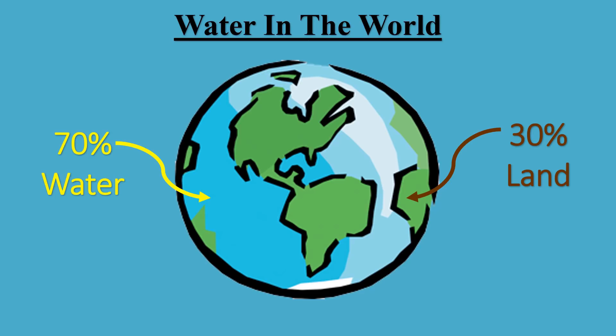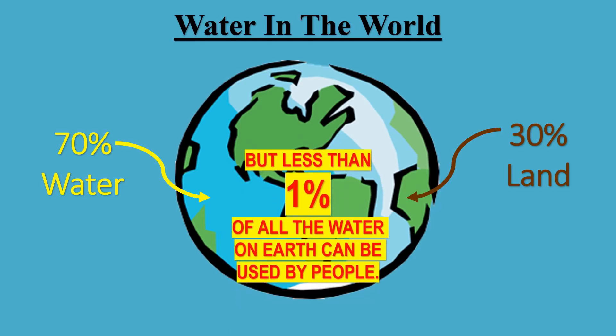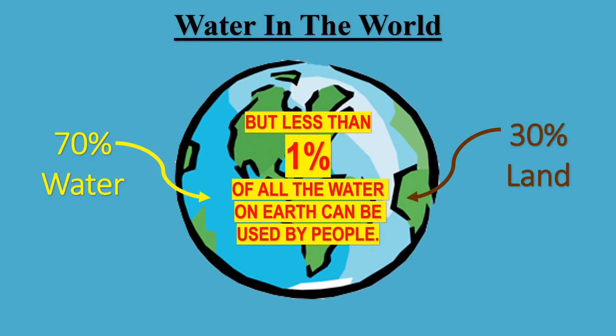Let's look at the planet Earth. Nearly 70% of Earth's surface is covered by water, but less than 1% of all the water on Earth can be used by people. The rest is salt water found in oceans, or fresh water in polar ice caps, or not accessible for practical usage.